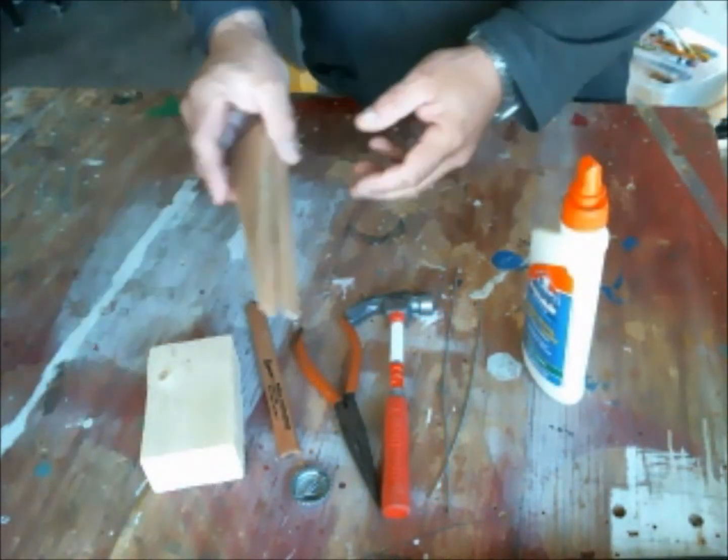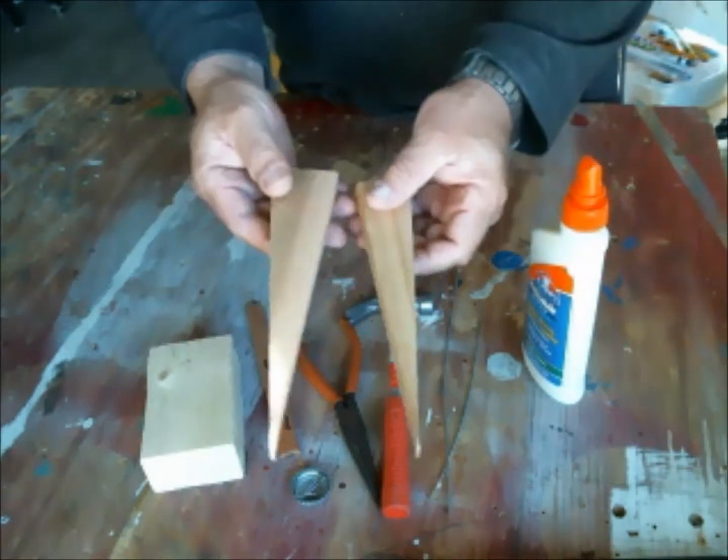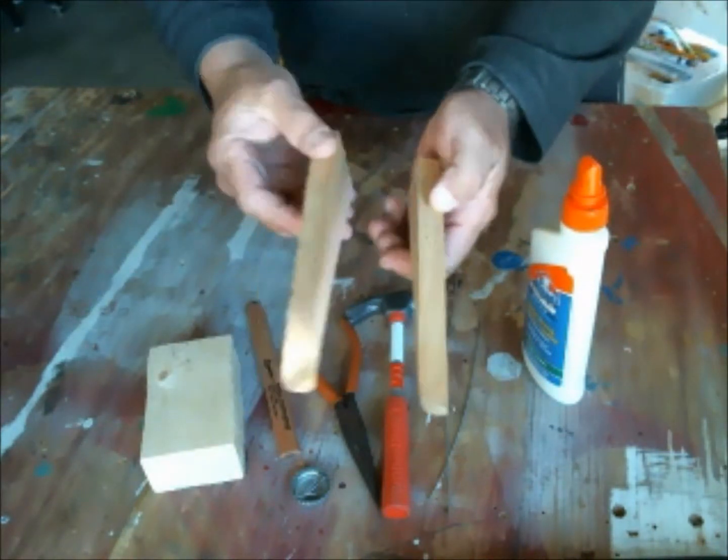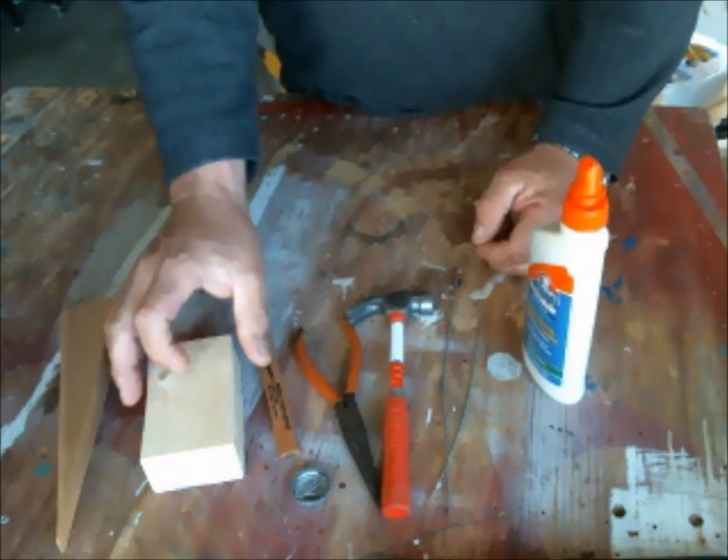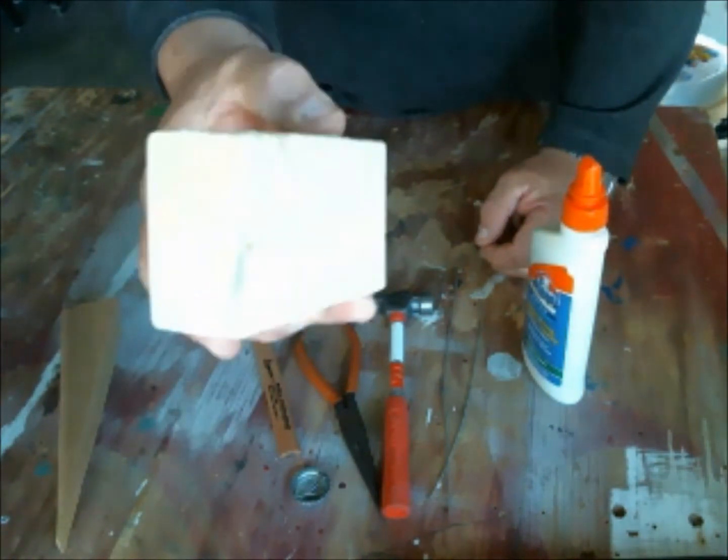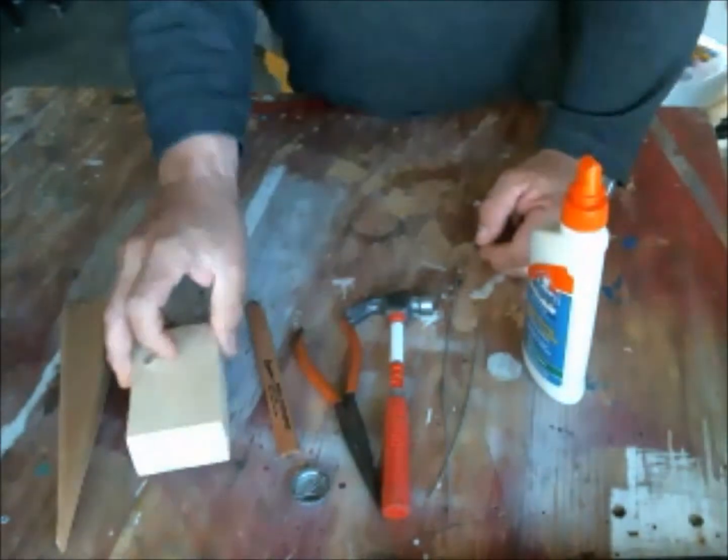For his arms, legs, we'll use these two pieces of triangular wood. They don't have to be triangles, they can be rectangles. A block of wood for the body, and that we'll use appropriate to the arms and legs, a pencil.